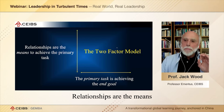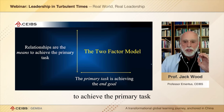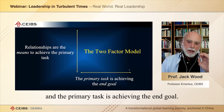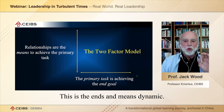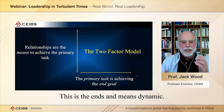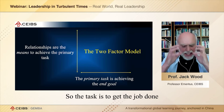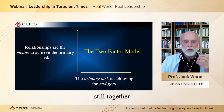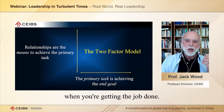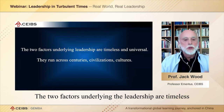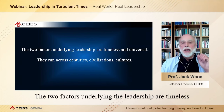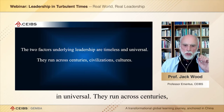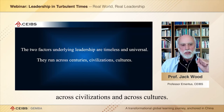Relationships are the means to achieve the primary task, and the primary task is achieving the end goal. This is the ends and means dynamic. The task is to get the job done, and the relationships are to make sure everybody's still together when you're getting the job done. It's a two-factor model, and the two factors underlying leadership are timeless and universal — they run across centuries, across civilizations, and across cultures.